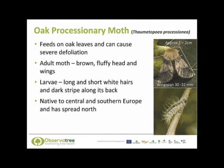The oak processionary moth, Thaumetopoea processionea, feeds on oak leaves and can cause severe defoliation of our native oaks. It has been receiving a lot of media interest recently. The photograph on the top of this slide illustrates the adult moth, which is brown and has a very fluffy head. Typically it is between 1 and 2 centimetres in length and has a wingspan of 30 to 32 millimetres. It is extremely similar in appearance to many of our native harmless moths.